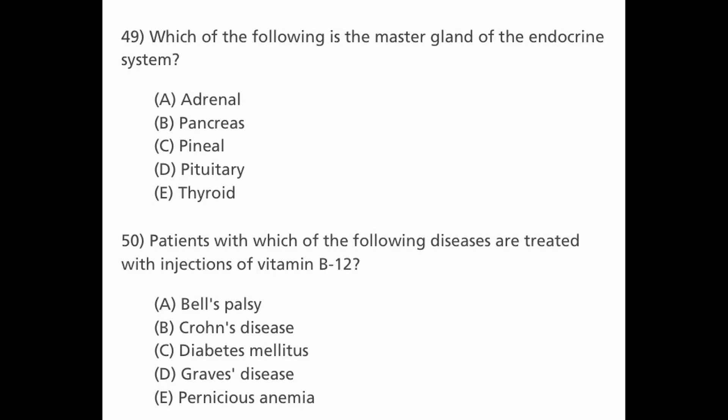Next question: which of the following is the master gland of the endocrine system? Options are A. Adrenal, B. Pancreas, C. Pineal, D. Pituitary, and E. Thyroid. The answer is D, pituitary, which is the master gland of the endocrine system.